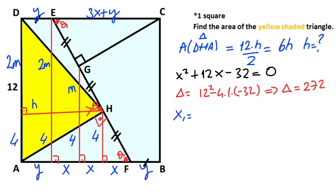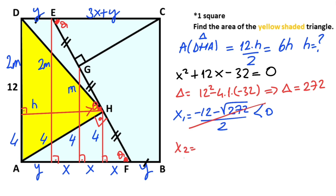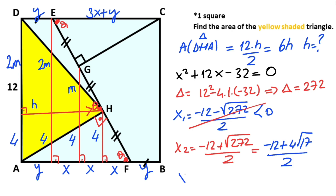Let's calculate the roots. The first root equals (minus 12 minus root 272) over 2. If you notice, the first root is less than 0, so it must be cancelled out because a length can't be negative. The second root equals (minus 12 plus root 272) over 2, which simplifies to (minus 12 plus 4 root 17) over 2. That means x equals minus 6 plus 2 root 17.